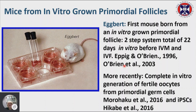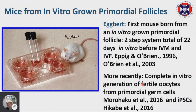The reality is the Eppig group modified their culture conditions, and subsequently in 2003 they were able to produce many offspring that have been healthy, with some slight differences in terms of blood pressure. More recently, there has been the generation of fertile oocytes from primordial germ cells in vitro and from induced pluripotent stem cells. We're not focusing on that stage — we're just focusing on in vitro growth of primordial follicles.